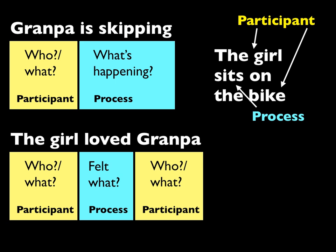So we've got participants and processes. Within processes, we've got material processes expressing actions or doings, and mental processes which express some sort of state of mind or psychological event. Is this all there are? Unfortunately not. SFL linguists like to identify six different kinds of processes.